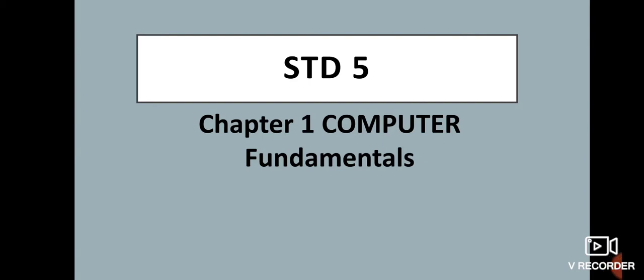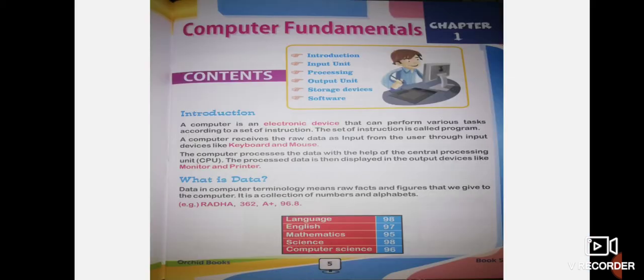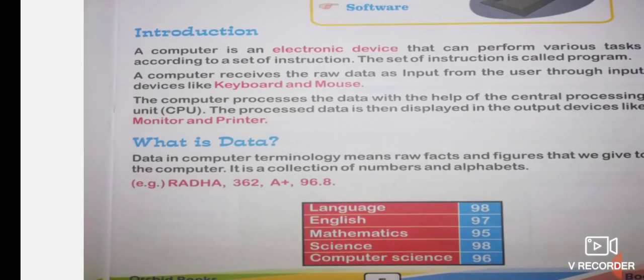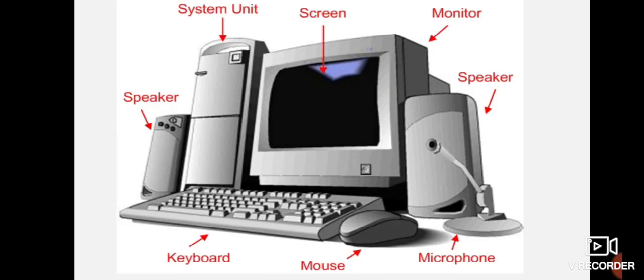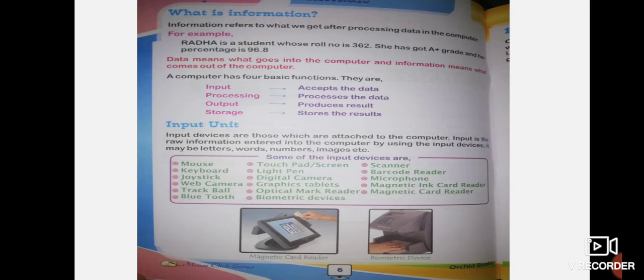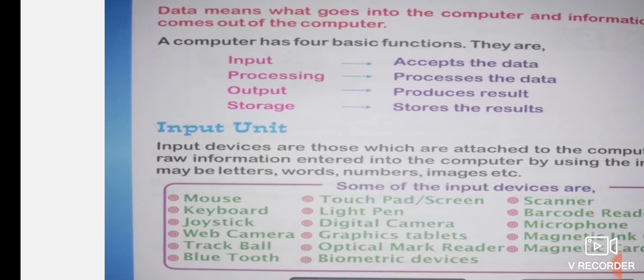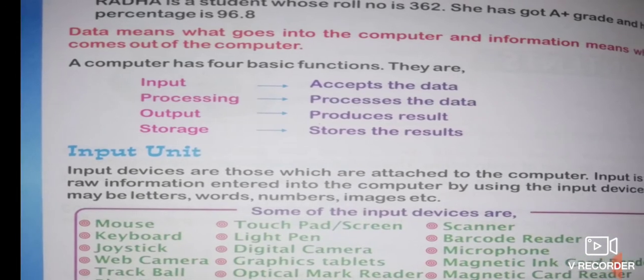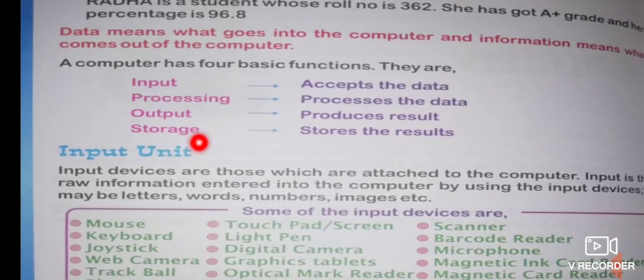Good morning students. The name of your first chapter in computer science is Computer Fundamentals. In the previous class, you came to know about what is a computer, what are the parts of a computer, some input and output devices, what is data and information with an example, and the basic four operations performed by a computer: input, processing, output, and storage.